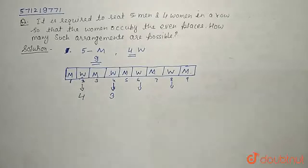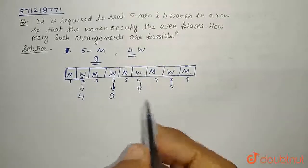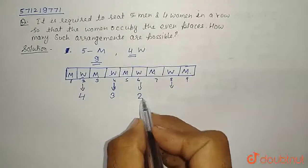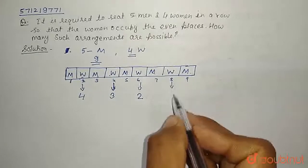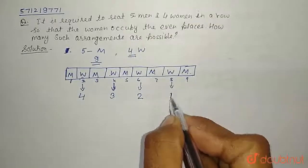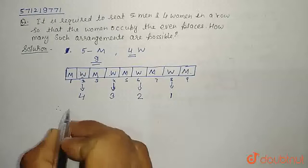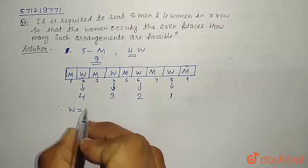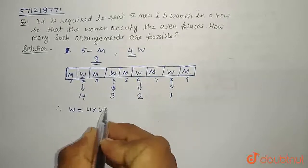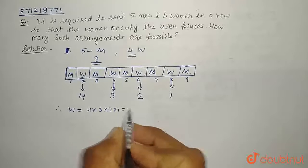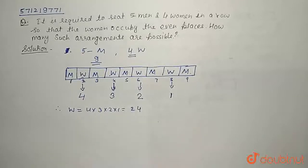Now 2 women already seated, so the 6th position can be filled with 2 remaining women. And similarly, the 8th position can be filled with 1 woman. So therefore, to arrange women, we have total 4 into 3 into 2 into 1, that is 24 number of ways.